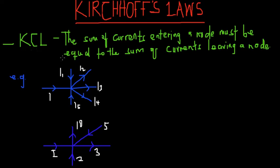Kirchhoff's current law, or KCL, states that the sum of currents entering the node must be equal to the sum of currents leaving the node.